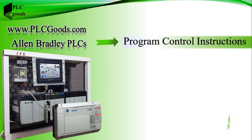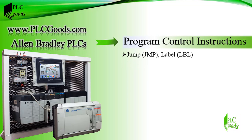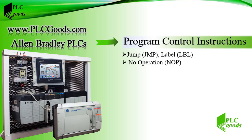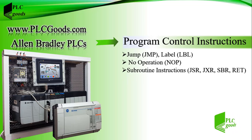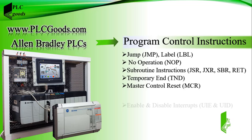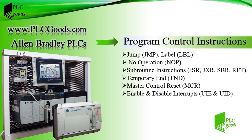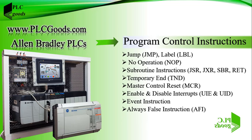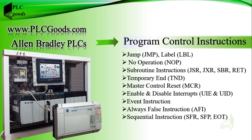In this video we'll start to learn program control instructions. First, the jump and label instructions will be explained — these two work together. We'll also see what the no operation instruction does (it doesn't do anything). After that, we'll see how subroutine instructions can be used to repeat a program many times, then TND, MCR, and interrupt instructions briefly, and how a program can be executed based on a specified event, as well as the AFI instruction.